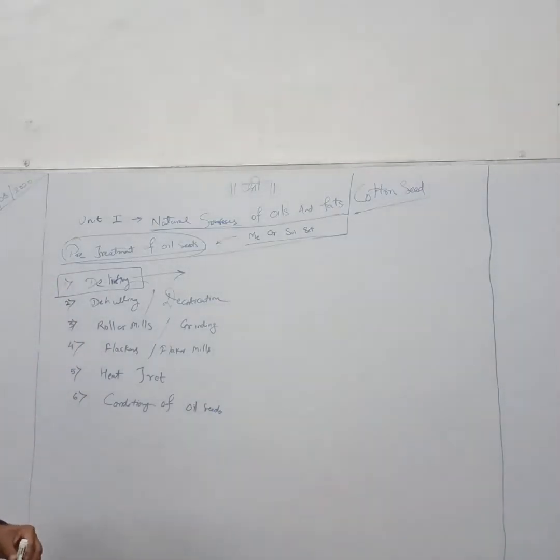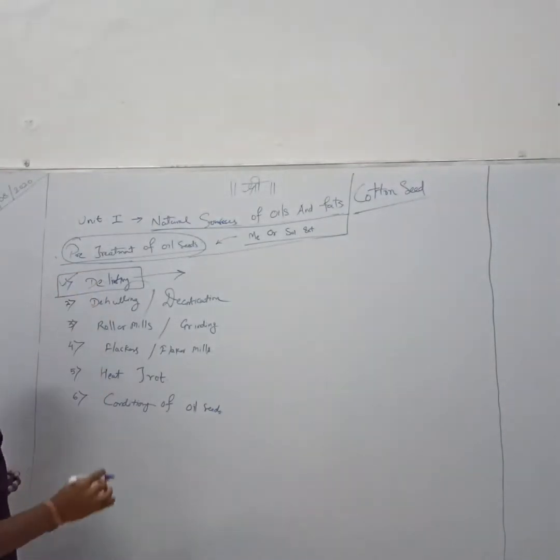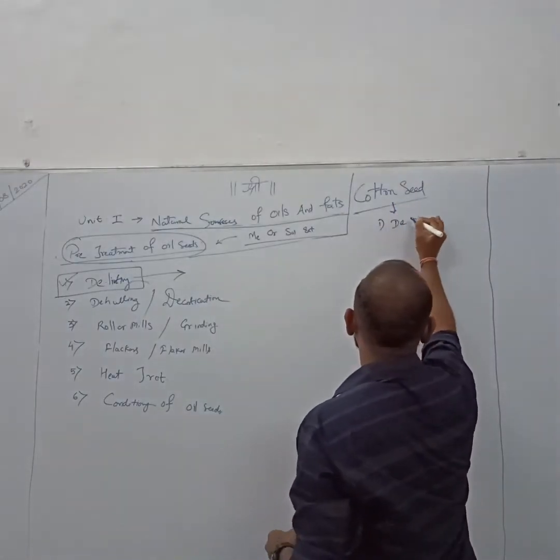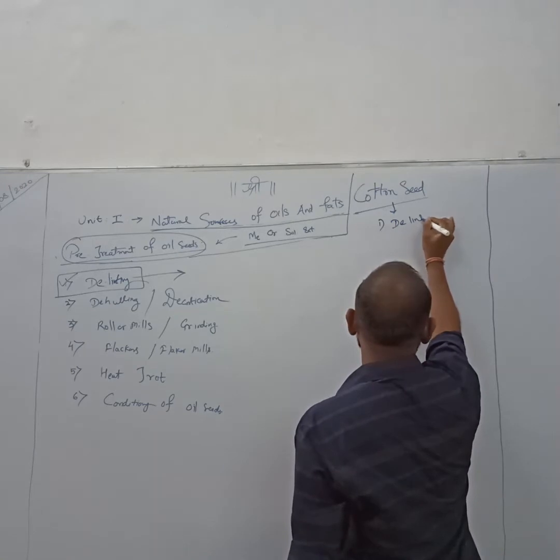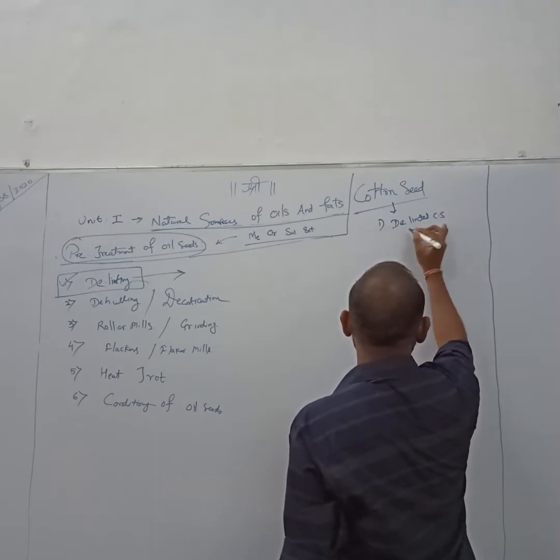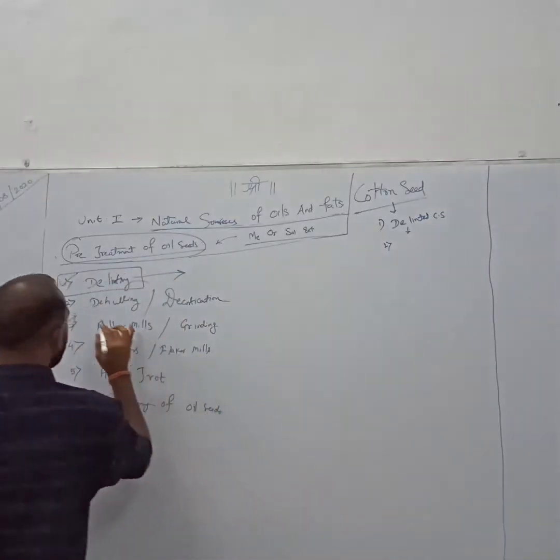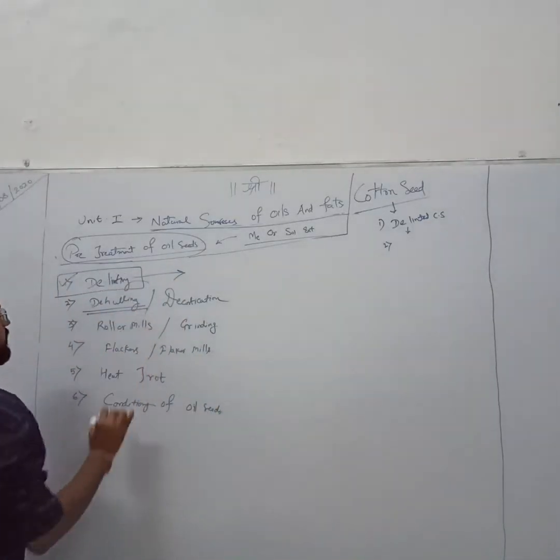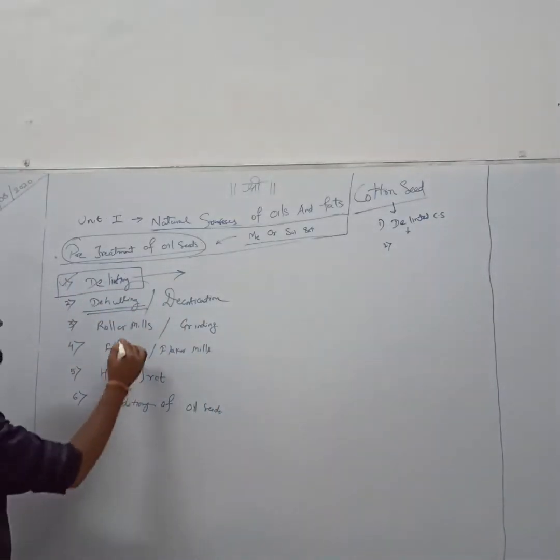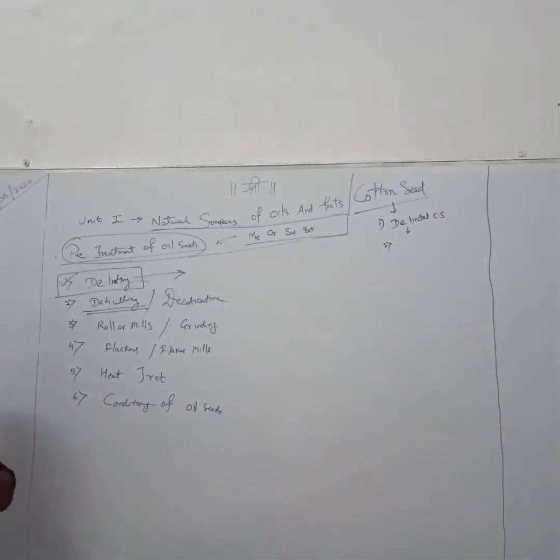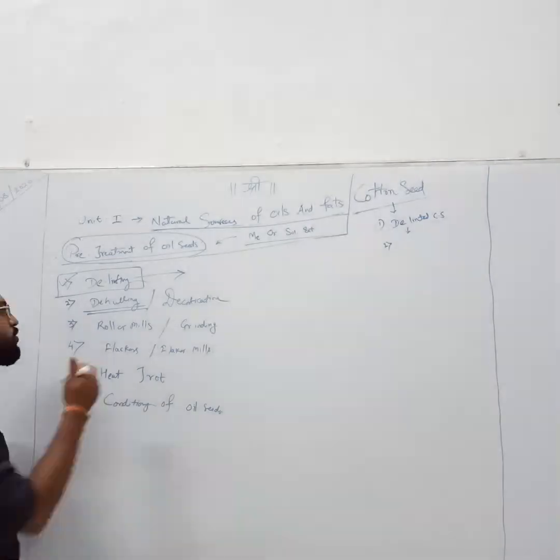Delinting is covered. Now we have the cotton seed. First step is covered - delinted cotton seed. Now same for de-hulling. We need to remove the husk. In second stage it is de-hulling or decortication. Decortication means breaking the seed in 4 to 5 different parts. That is known as mainly decortication. Before that we want to focus on de-hulling.